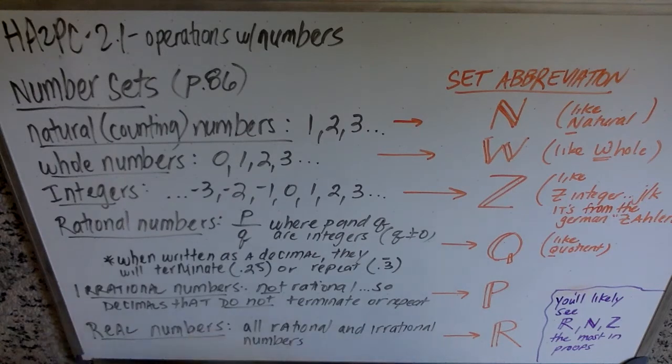In math, a set is sort of a group of things. You could talk about even numbers as a set, like 2, 4, 6, 8. You could talk about multiples of 3 as a set, like 3, 6, 9, 12, etc.